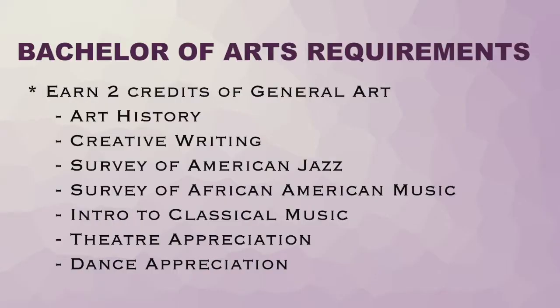Every college on campus has its own requirements for those majoring in their departments. This is where declaring a Bachelor of Arts or Bachelor of Science comes in. For our college — the College of Arts and Communication — a Bachelor of Arts requires the following: first, earn two credits of general art. These credits must come from outside your own department, so communication or journalism majors cannot use journalism or communication classes. Classes that fulfill this requirement include art history, creative writing, survey of American jazz, survey of African American music, intro to classical music, theater appreciation, or dance appreciation.